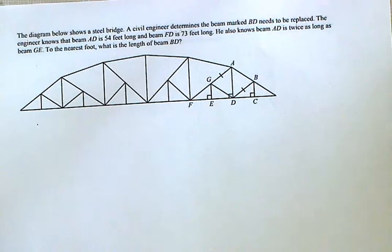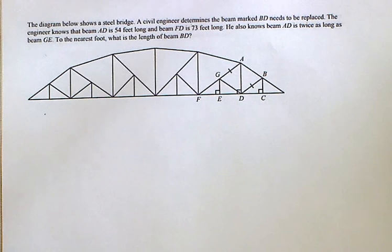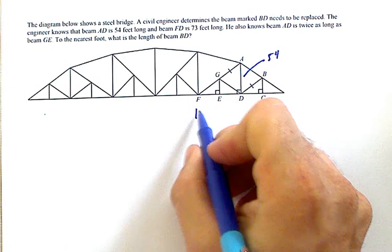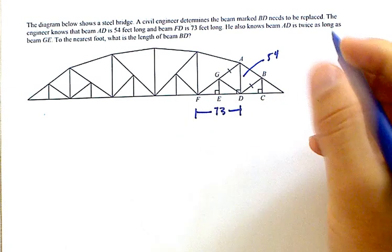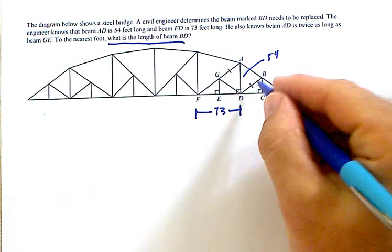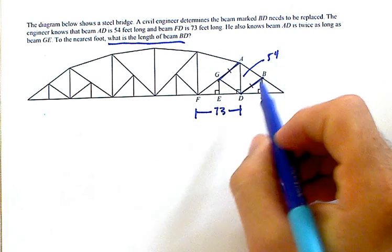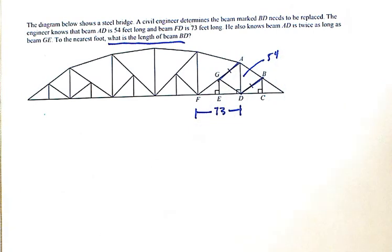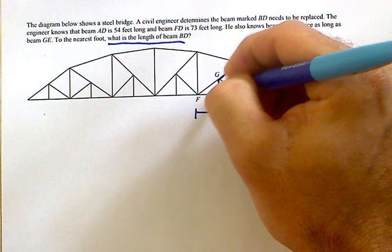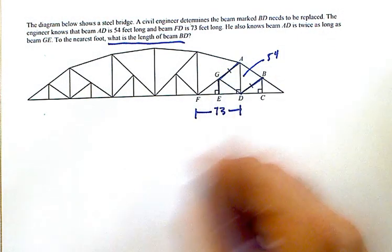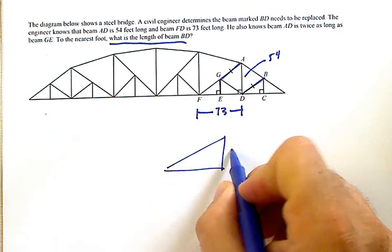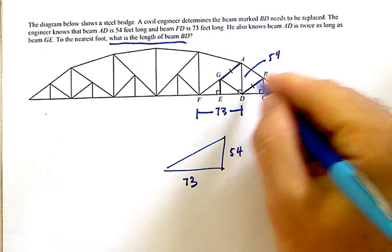This bridge question looks complicated. It's really not. They're telling you AD is 54. They're telling you that this is 73. And they're asking, what is the length of BD? Now it tells you that BD and AG are the same. And it tells you that AD is twice as long as GE. So basically, whatever we get for this hypotenuse, using the 54 and the 73, because it's twice as long, BD is just going to be half of that.